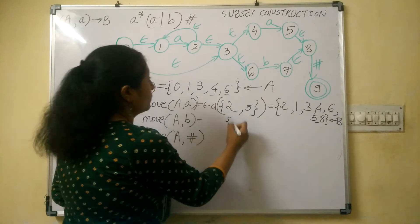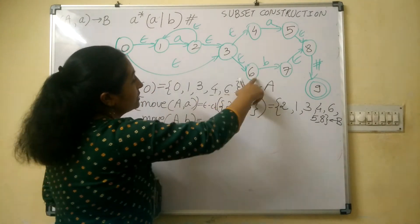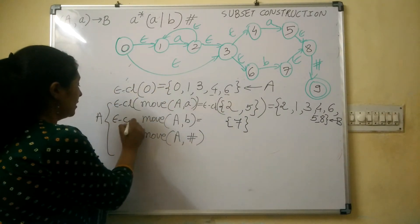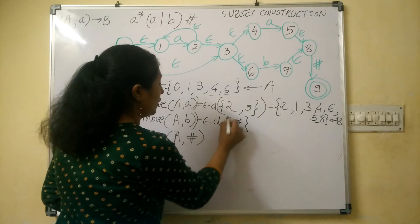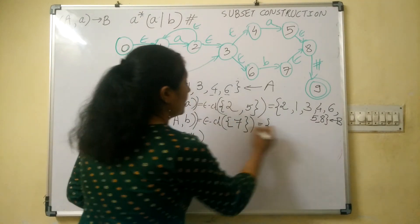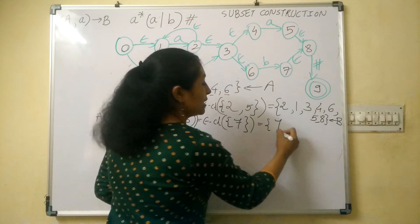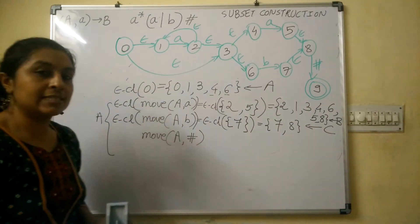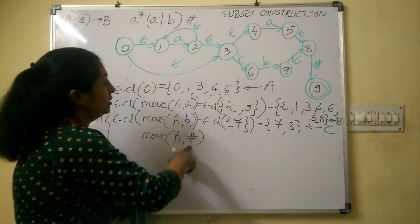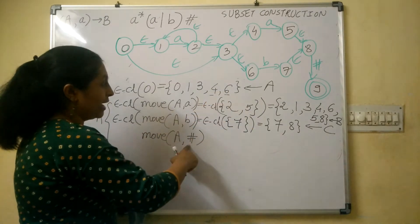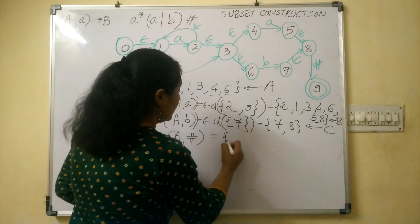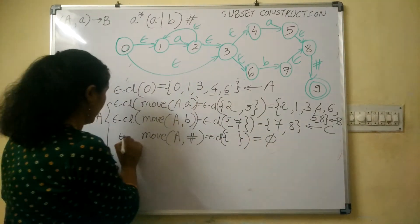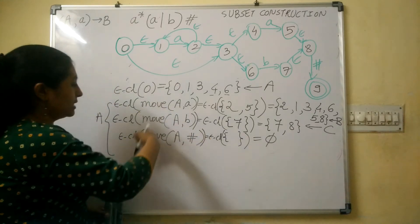Now find move(A, b). State A contains states 0,1,3,4,6. From state 6 we have a transition on 'b' to state 7. Find null closure({7}): include 7 itself, then include 8. This gives {7, 8}, which is a new state C. For move(A, #): there are no states in A with a hash transition, so this gives the empty set. Null closure of the empty set is also empty (∅).